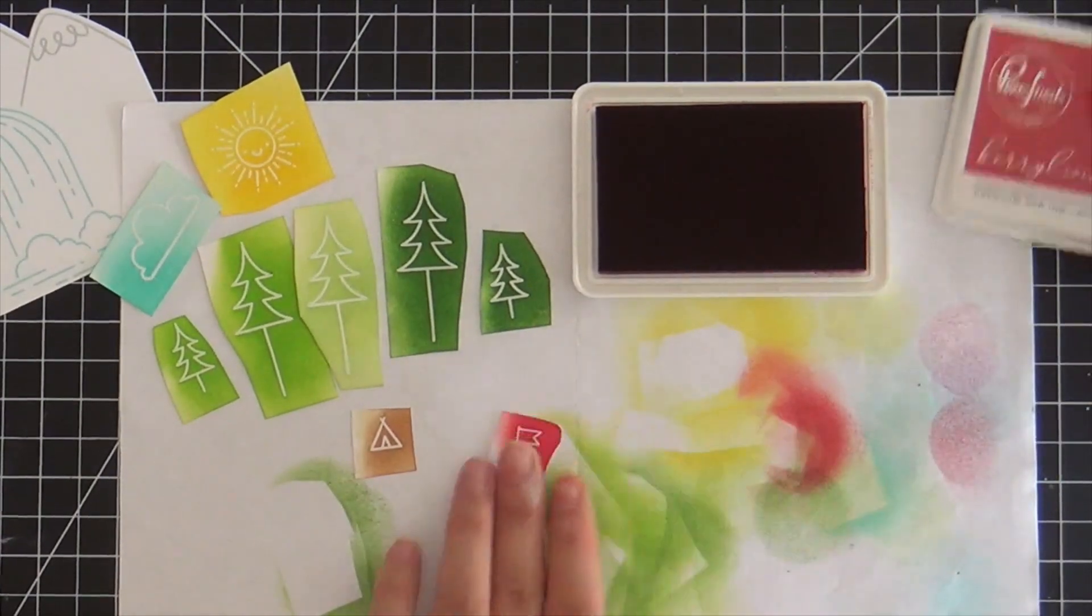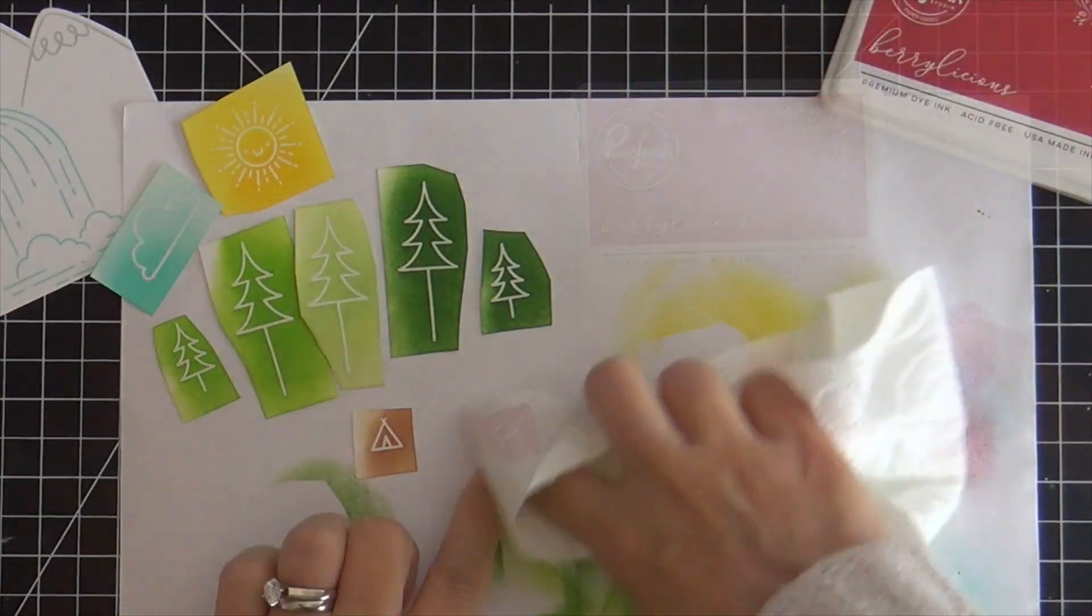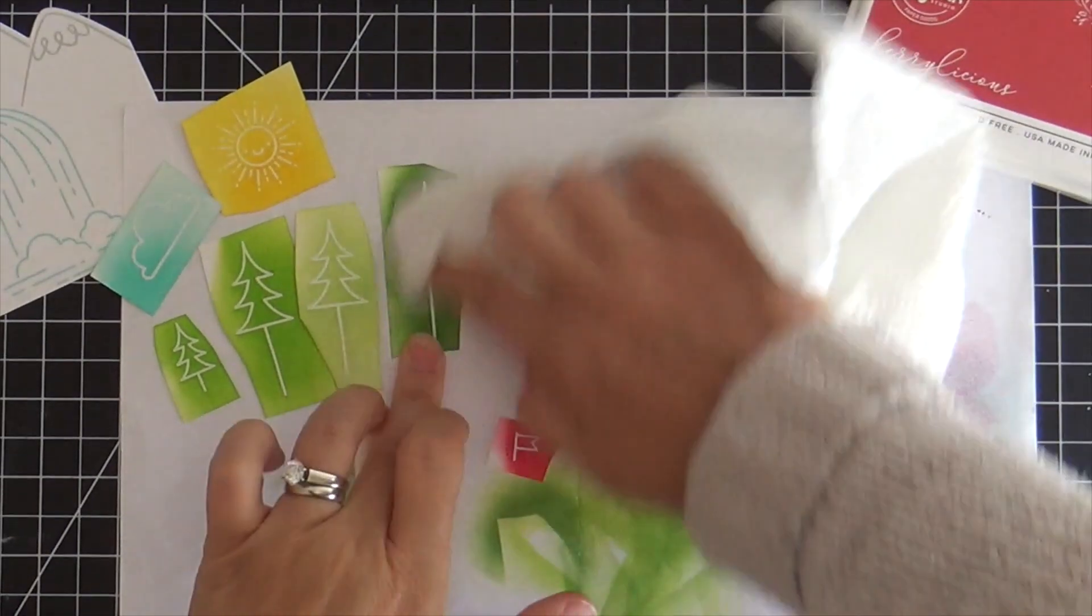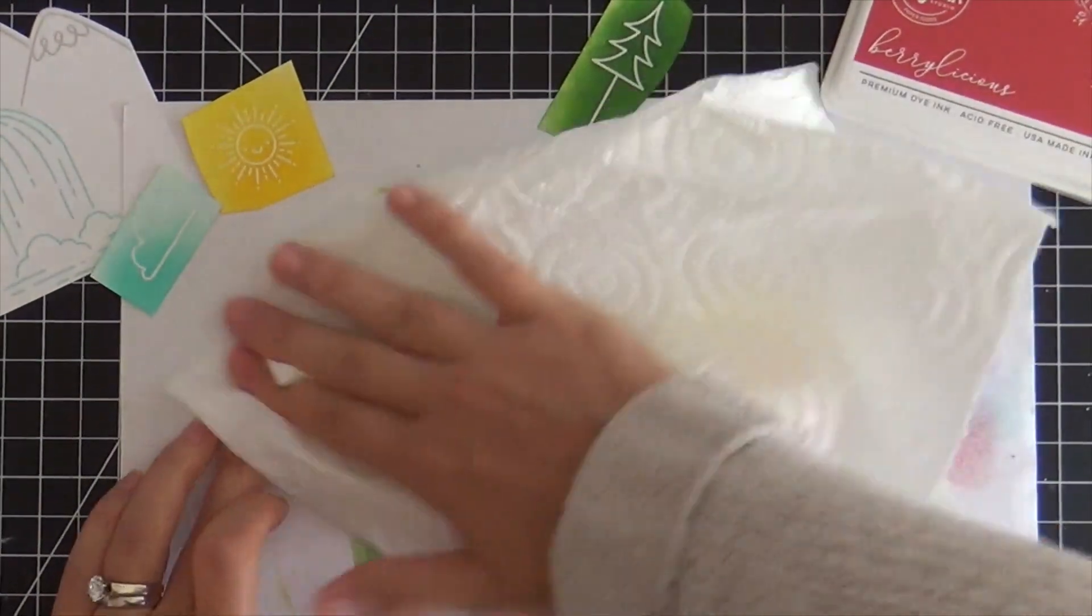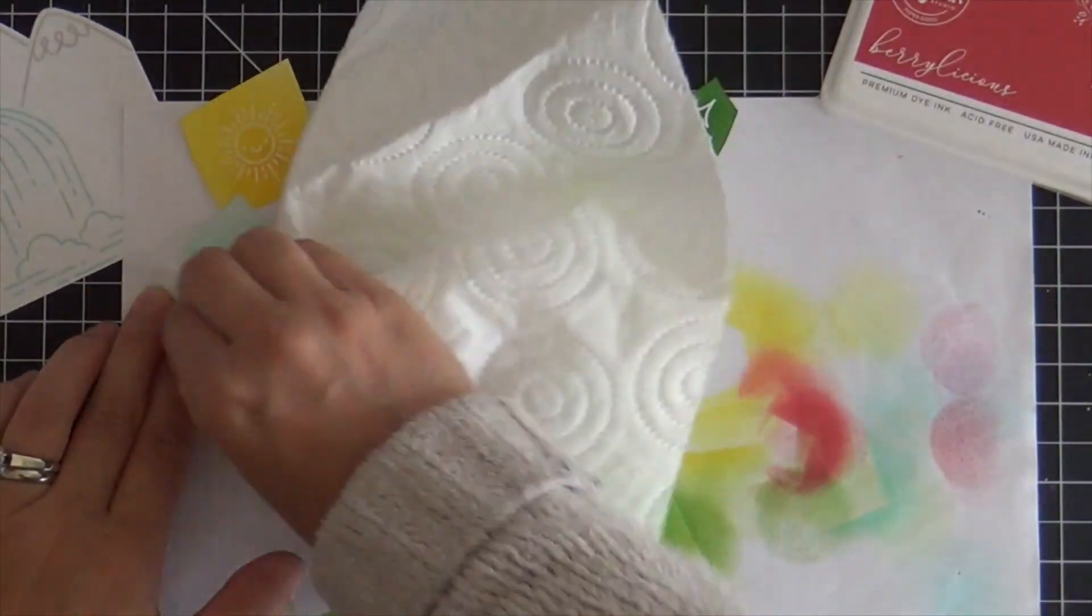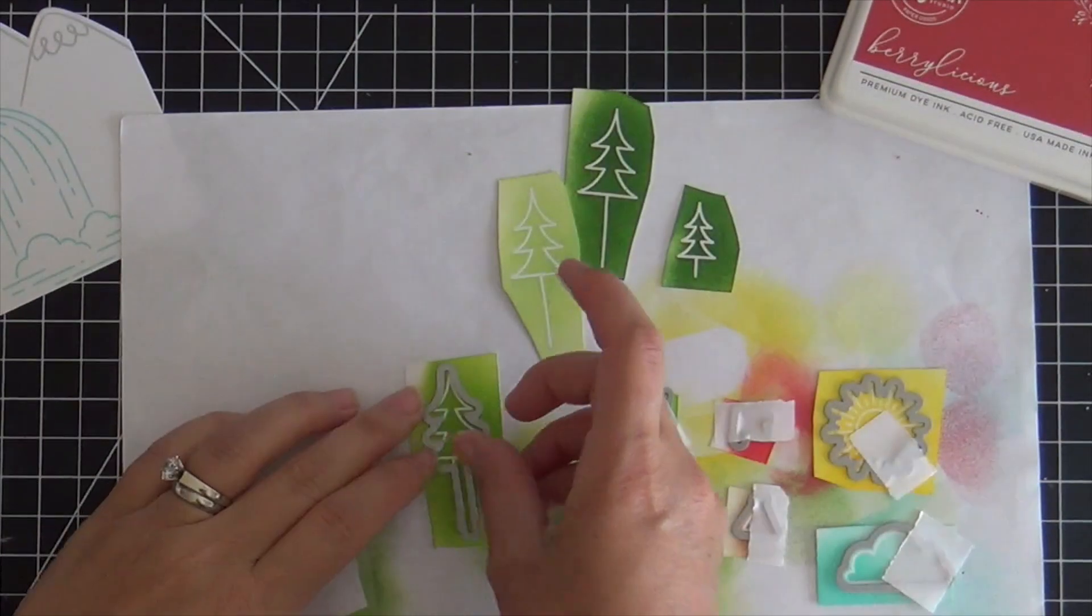Anywho, I'm adding a bunch of these vibrant colors, Berrylicious for that red little flag. I like to take a dry paper towel and get off any excess ink that is sitting on top of that clear embossing powder.